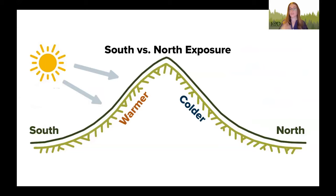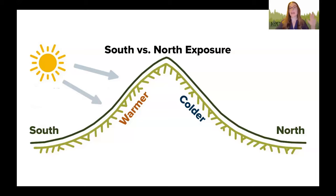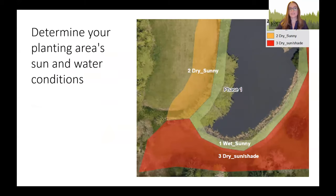The same goes for south versus north. Because we're in the northern hemisphere, the sun tracks along the southern sky. So if you have a big hill, the south side is going to be warmer and drier continuously throughout the year. We've now discussed soils, which impact water availability, as well as sun exposure.